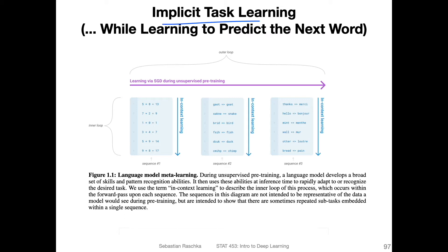Regarding implicit task learning: during the unsupervised pre-training — the self-supervised learning, which they call the outer loop — the model implicitly learns to do in-context learning, because of the rich information in these texts. It sees examples like spelling corrections and these types of things, which are these in-context learning tasks.